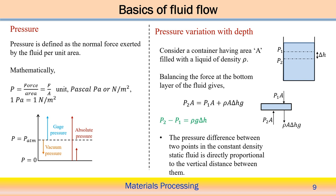Pressure is defined as the normal force exerted by the fluid per unit area — force divided by area — with unit Newton per meter square, also known as Pascal (1 Pascal = 1 Newton per meter square). Sometimes we refer to absolute pressure and gauge pressure. Gauge pressure takes atmospheric pressure as the reference point — it is the pressure above atmospheric pressure. Absolute pressure takes p = 0 as the reference, so atmospheric pressure has an absolute value of one atmosphere but a gauge pressure of zero.